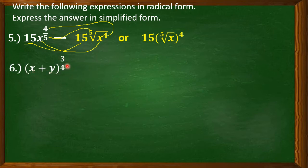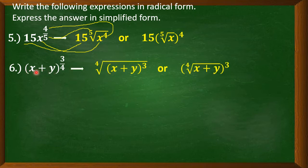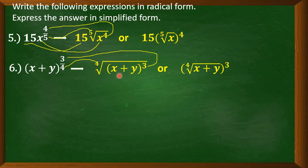Next: the quantity of x plus y to the power of three fourths. Here, a certain quantity is being raised to the power of three fourths. So x plus y will be our radicand, written inside the radical sign. The denominator 4 becomes the index, while 3 becomes the exponent. This is read as the fourth root of the quantity x plus y, cubed, or the quantity of the fourth root of x plus y, raised to the power of 3.